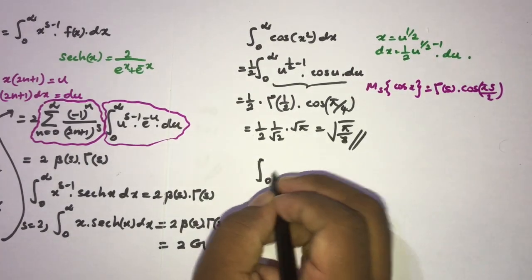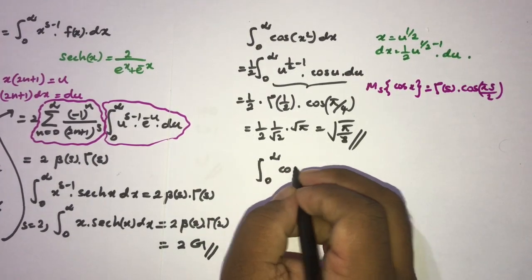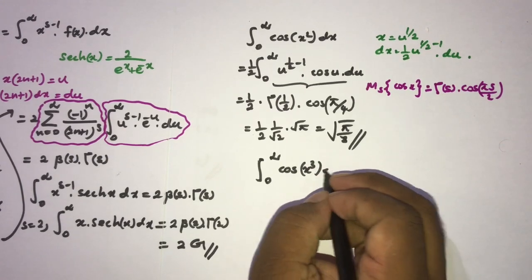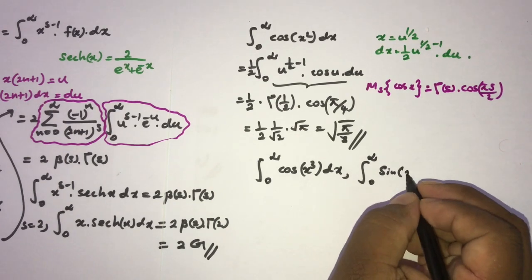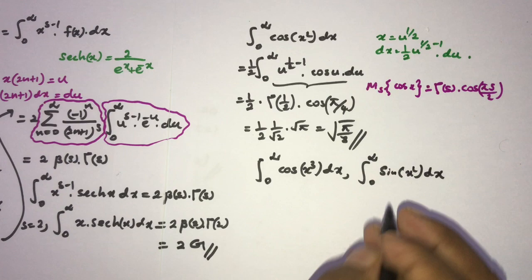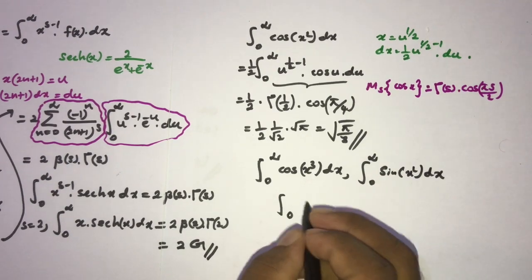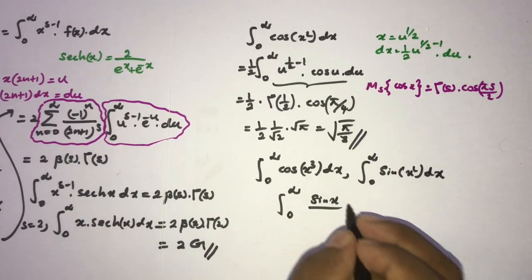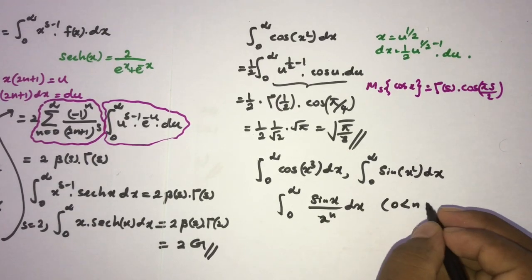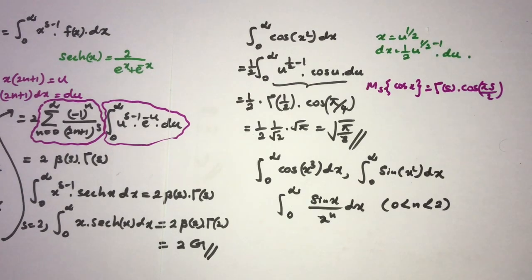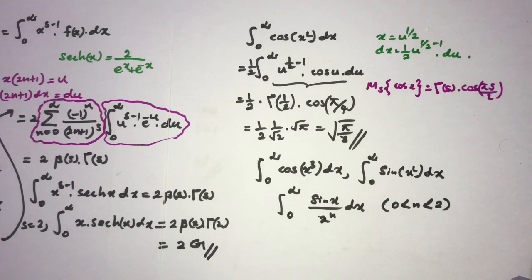You can also evaluate the integrals of cos(x³) dx, sine of x squared dx (the Fresnel sine integral), and sin(x)/x^n dx for n between 0 and 2, among many others using the Mellin transform. If you want, I will create more content covering Mellin transform techniques, so please let me know in the comments.